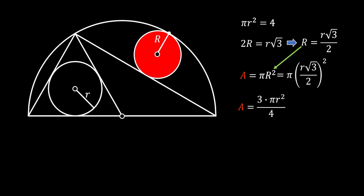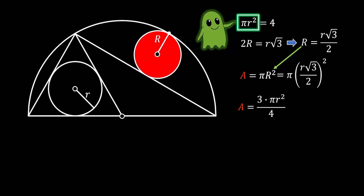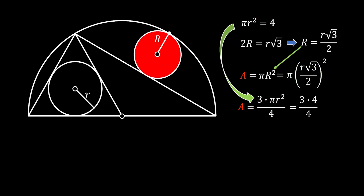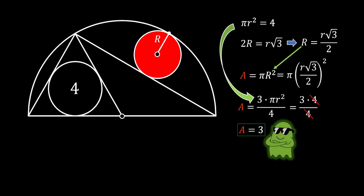Now here is a really awesome thing. Remember before that we saved the value of π r², which is equal to 4. We have the same value of π r² in our expression. So we can substitute 4 for π r², cancel out the 4, and finally get that the area of our red circle is equal to 3 squared units. And this is our awesome solution.